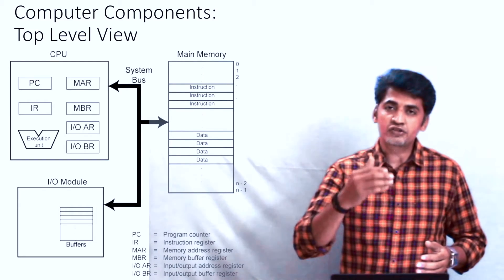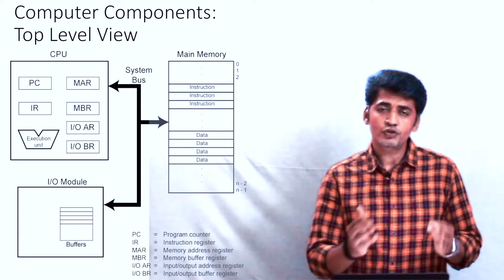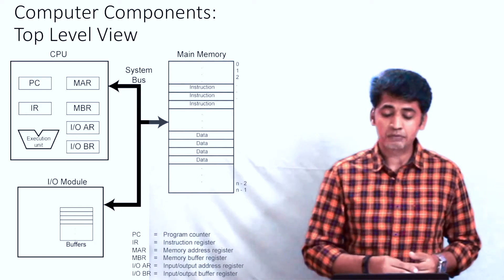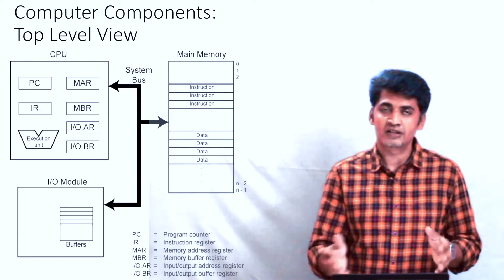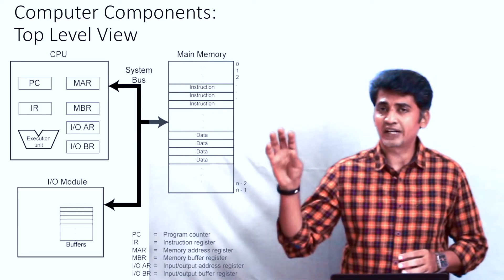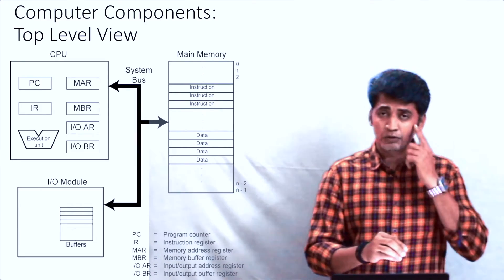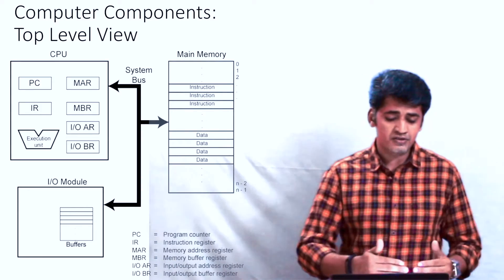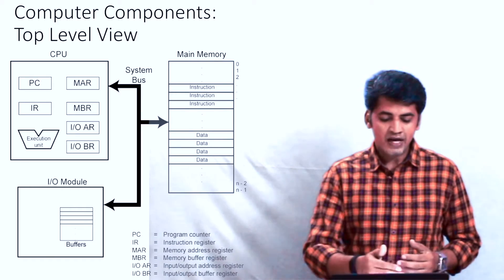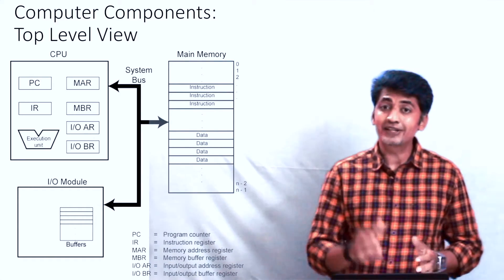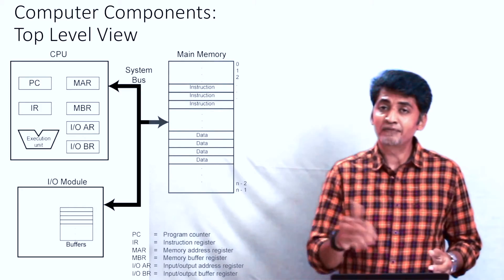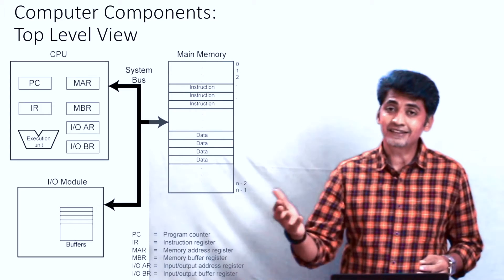The first component is the program counter. The program counter finds the next instruction to be executed after each instruction fetch. The second one is the MAR, that is the memory address register. For instruction fetch or data fetch, this address register is used to point out the exact memory location. Next is the memory buffer register — if you want to take data from a memory location, this buffer register is used. The third one is the IOAR, the input/output address register, used to locate a particular IO device, and the IO buffer register is used to collect data from that IO device.